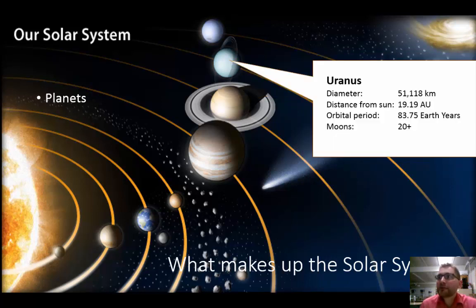Uranus has a diameter of 51,118 kilometers, 19.19 astronomical units from the sun. Its orbital period is 83.75 Earth years and it has at least 20 moons.